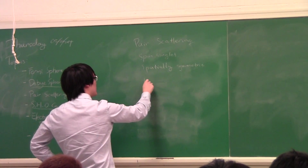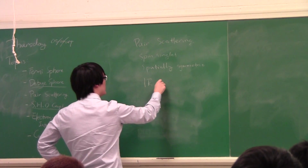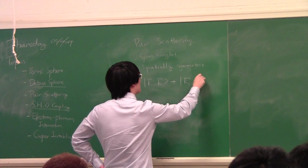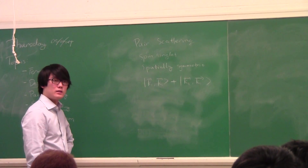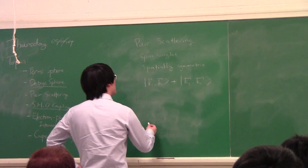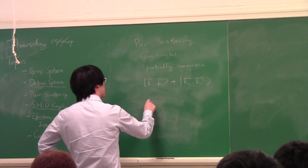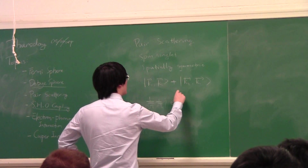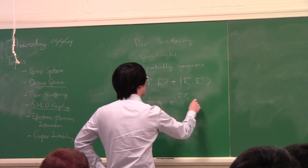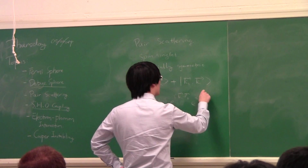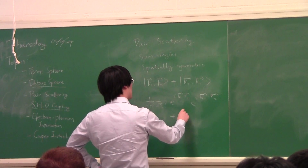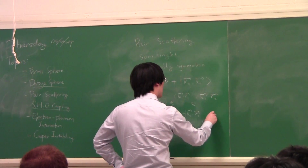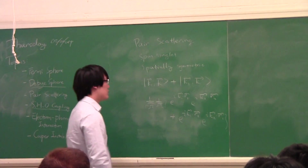So the spatial wave function is: I can have K1 for electron 1 and K2 for electron 2. If I assemble the wave function from the plane wave states, it's going to look like 1 over square root of omega times 1 over square root of 2, times [e^{iK1·R1} e^{iK2·R2} + e^{iK1·R2} e^{iK2·R1}]. So it's going to be something like this.